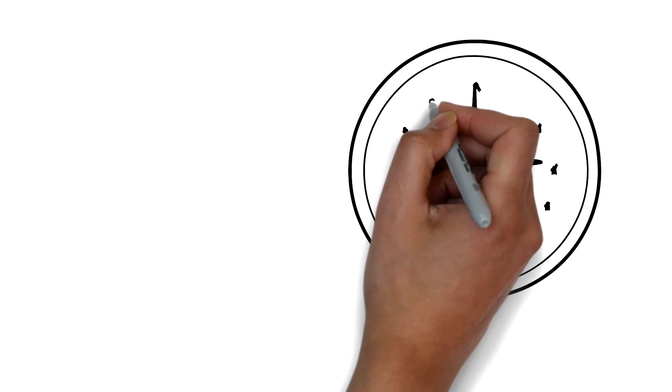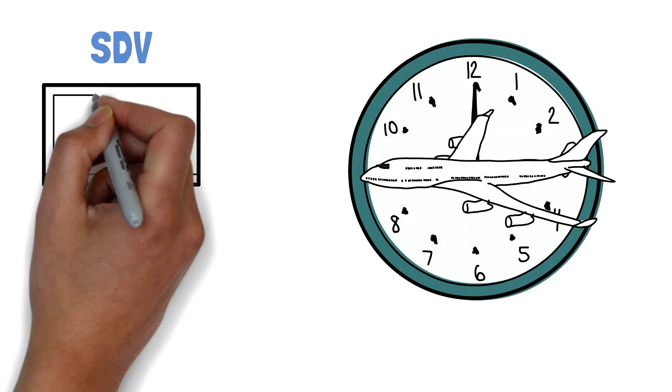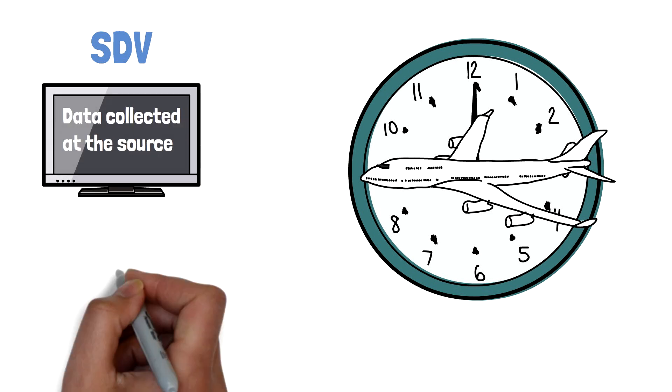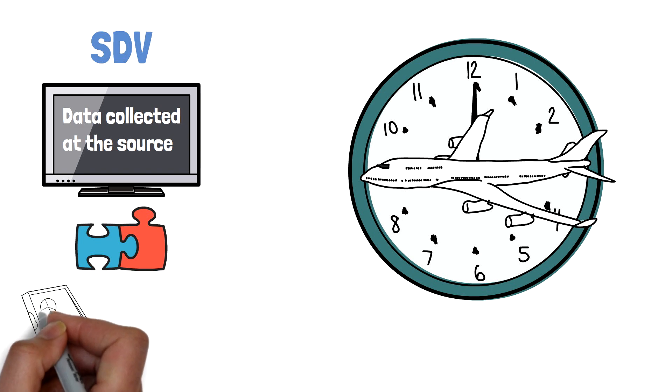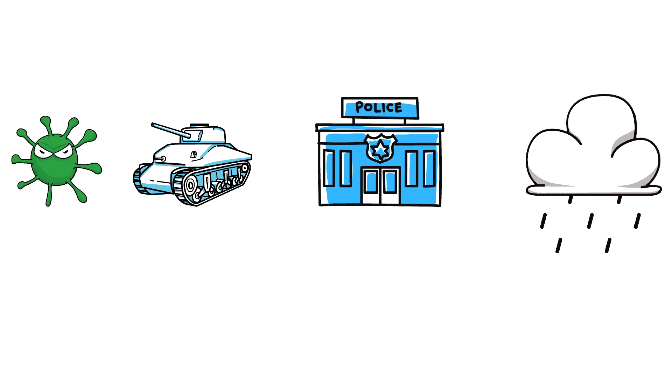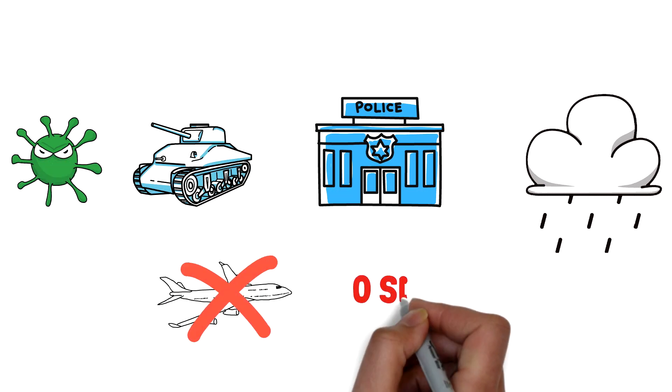They often spend hours traveling to the study sites to conduct source data verification, which required them to confirm the data collected at the source match the data recorded in the case report forms. Travels to the sites were often faced with challenges such as bad weather conditions, border controls, political issues, or even pandemics like that experienced during the COVID-19 pandemic. With no travel means, they were unable to verify the data.